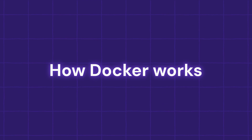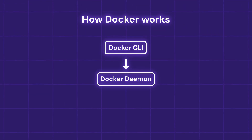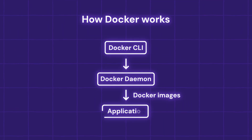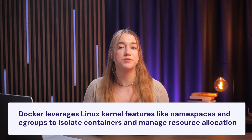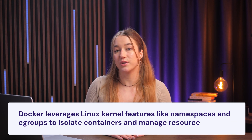Here's how Docker actually works. The Docker CLI sends your commands — like creating or running containers — to the Docker daemon, which then carries out those instructions. The daemon uses Docker images to create and manage containers that run your applications. Docker also uses Linux kernel features like namespaces and cgroups to keep containers isolated from one another and limit their access to system resources. This isolation ensures security and allows multiple containers to run on the same system without interfering with each other.